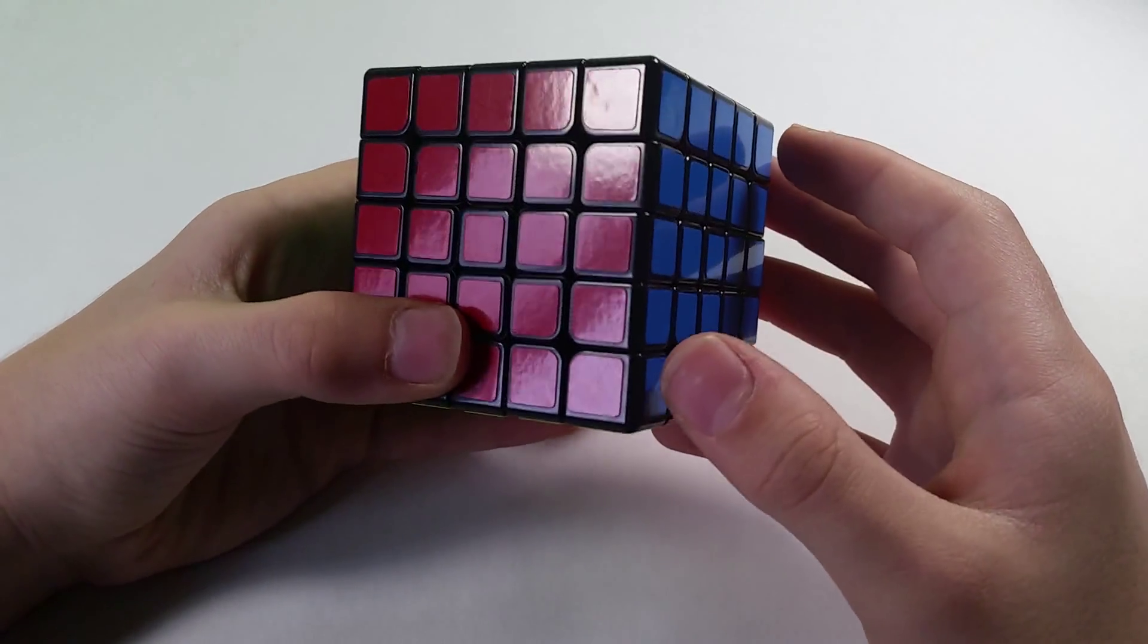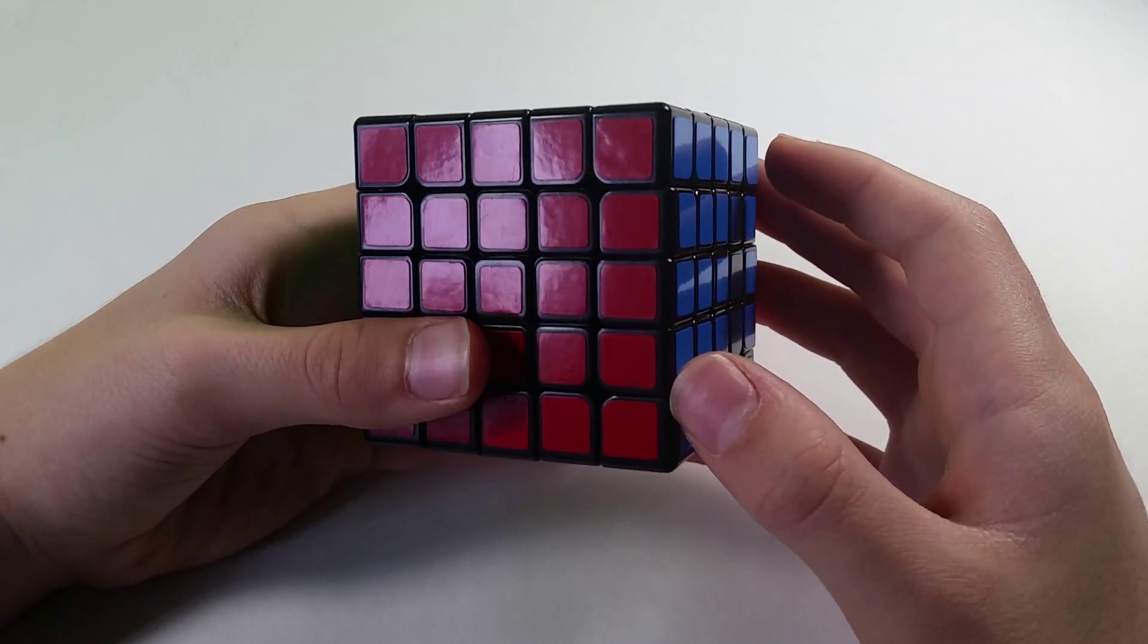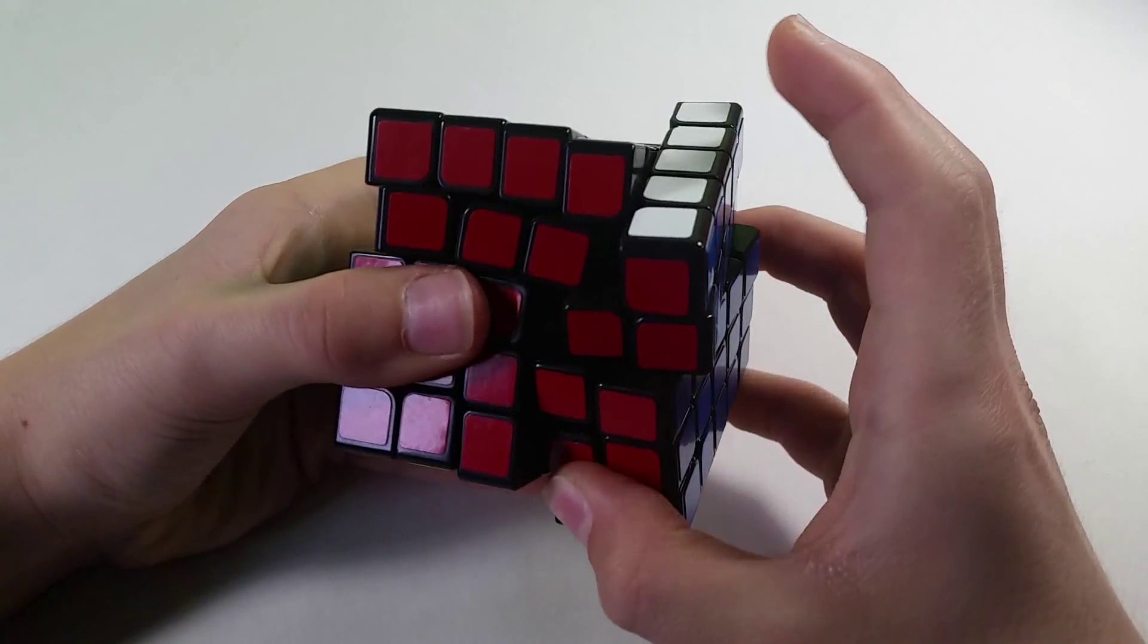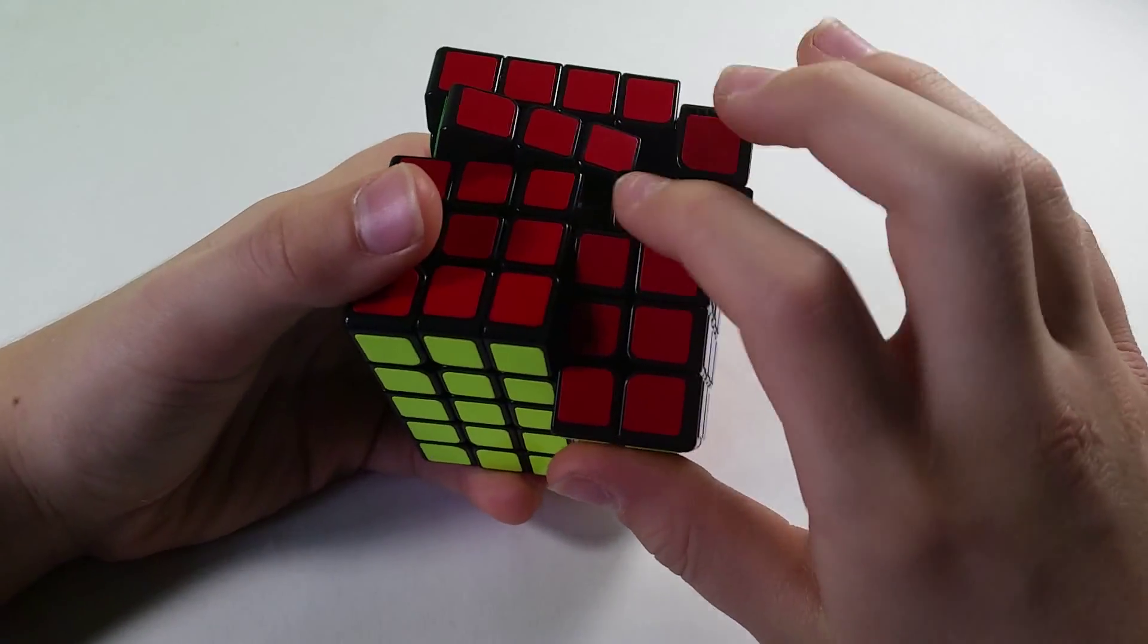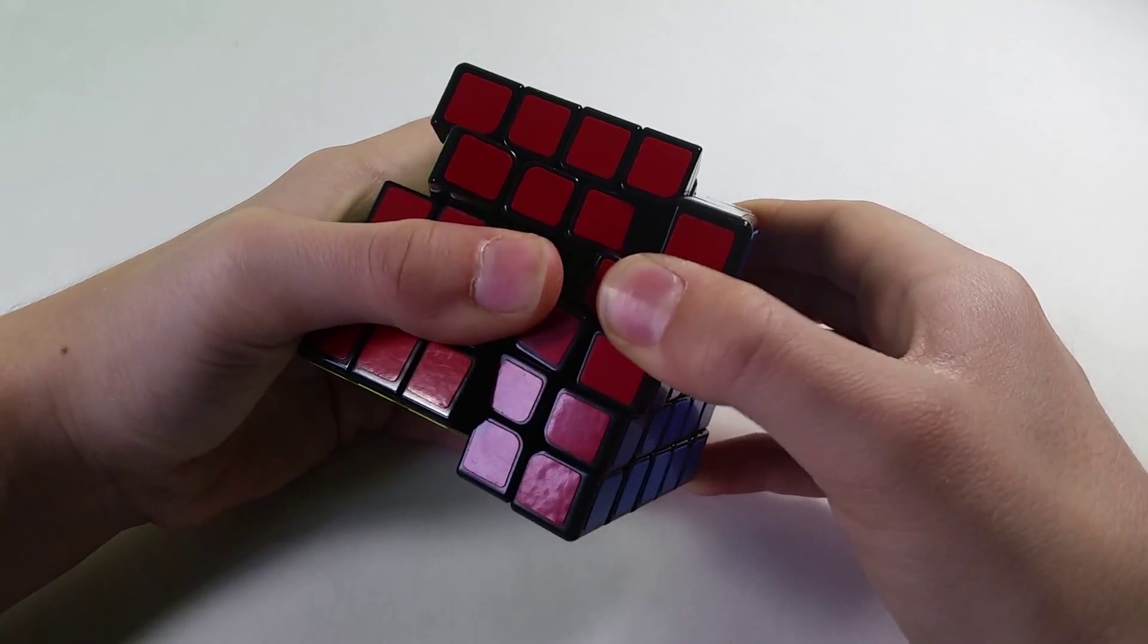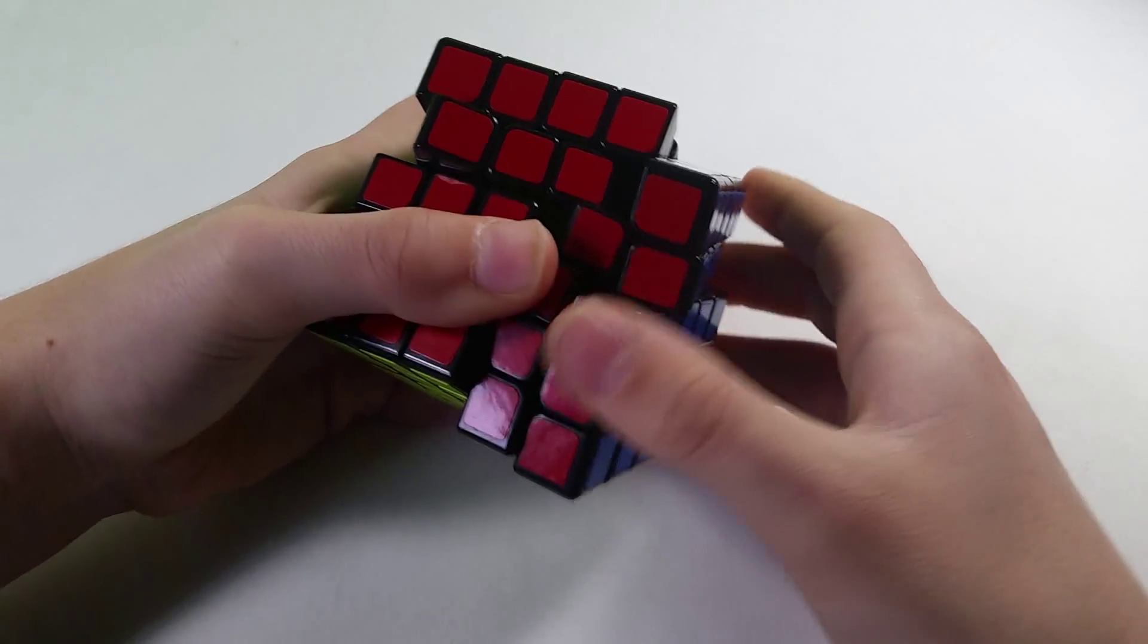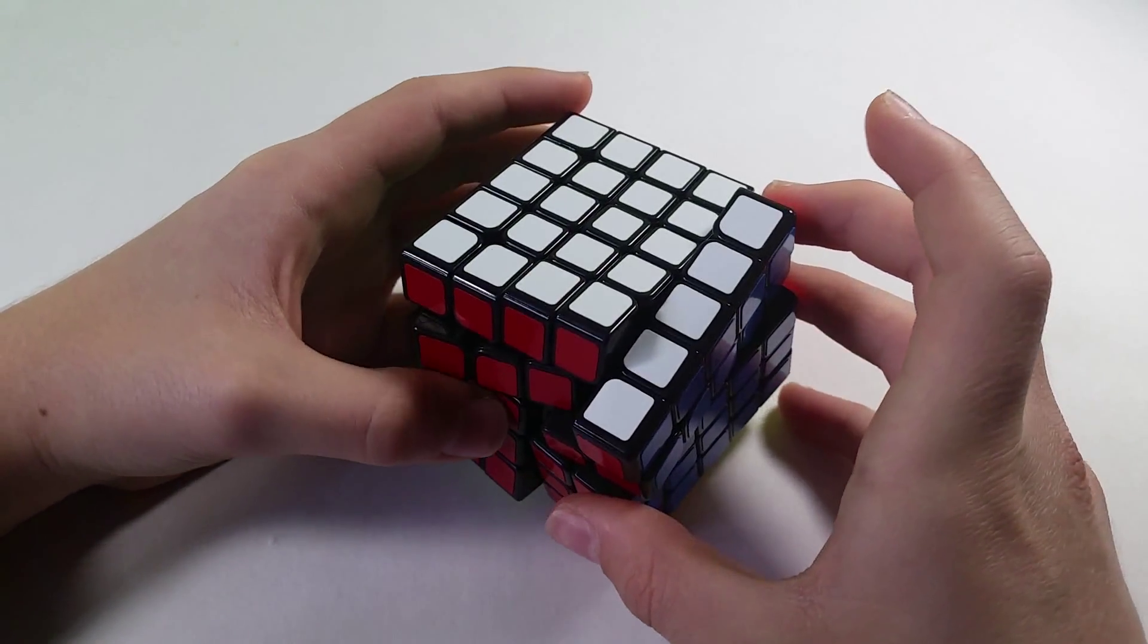Though this cube does have another lockup that I don't think is on any other 5x5s. Sometimes, if you get the standard 5x5 lockup, it'll get so locked up that somehow this corner piece and this edge piece will end up switching places. I don't know how it happens, but it can be a super serious lockup that can completely ruin one of your solves.